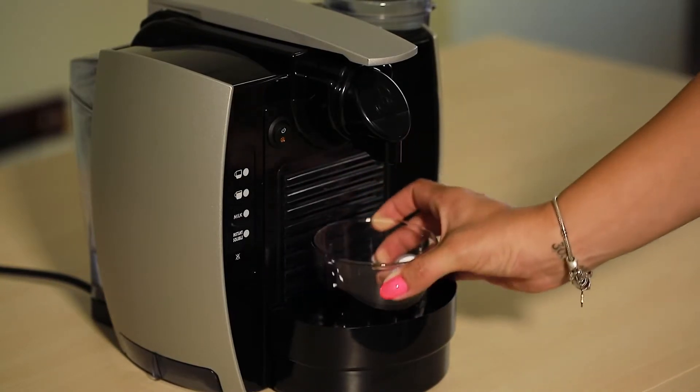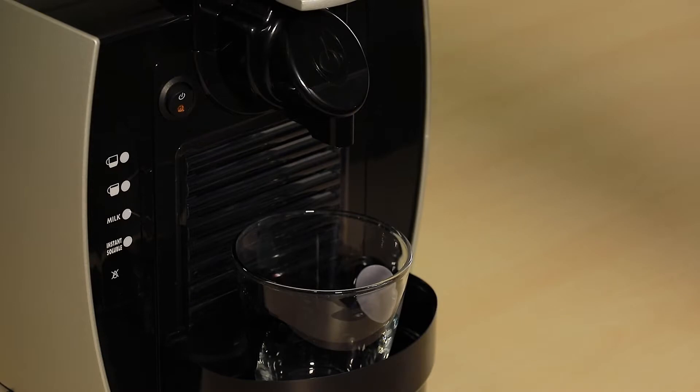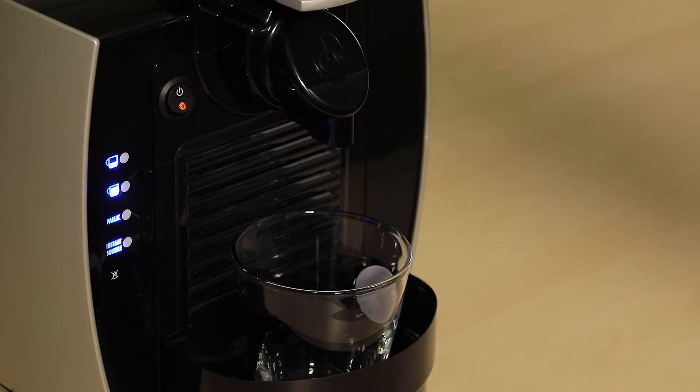Switch the button on the coffee machine. Wait until all the buttons are on, and after, press the B button to start the descaling process.